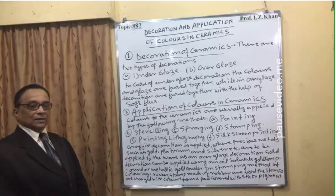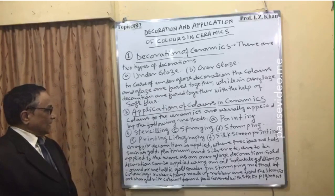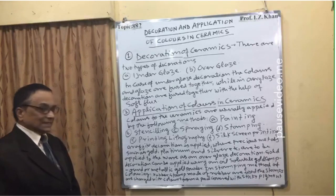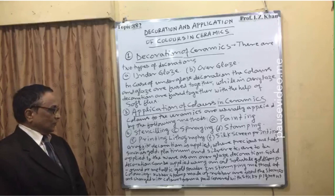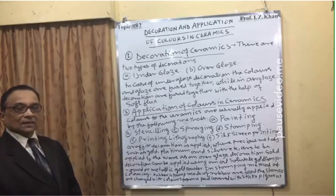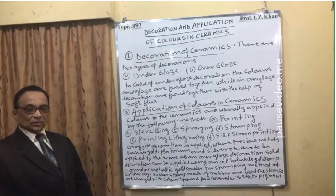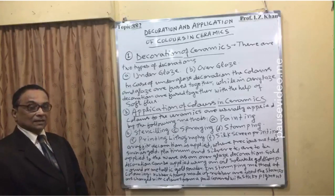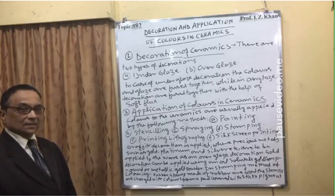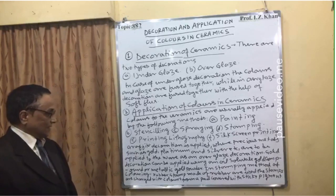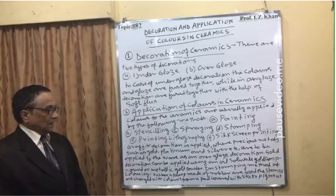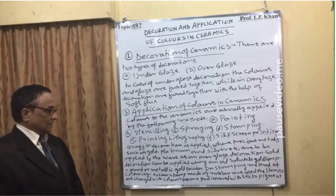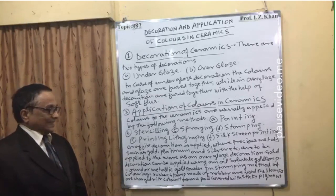Additional application methods include lithography and (f) silk screen printing. These are all various methods used to decorate ceramics with beautiful color. Graffito decoration is applied where precious metals such as gold, platinum, and silver are used as an over glaze decoration — this is a very costly decoration. The metallic precious metals are mixed with color and coated. Gold decoration can be applied using an oil-based solid gold compound or metallic gold powder. In the stamping method, a rubber stamp is charged with sticky color pigment.